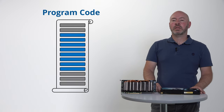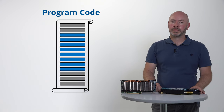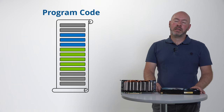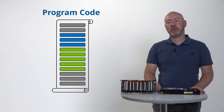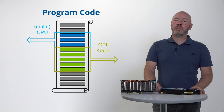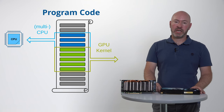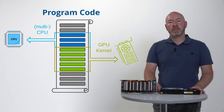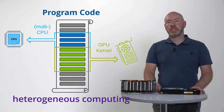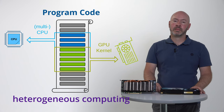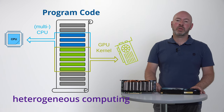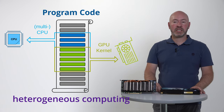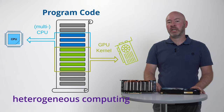How can you use the GPU for your application? It is important to identify the compute-intensive parts in your program code. Provided that your problem is parallelizable, your code is executed in parts on the CPU and in parts on the GPU, which is an example for heterogeneous computing. In order to achieve near-optimal performance, the GPU part should utilize a substantial fraction of all the ALUs available on the GPU.